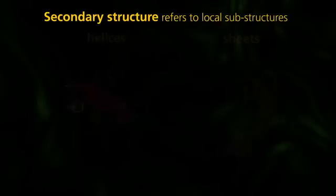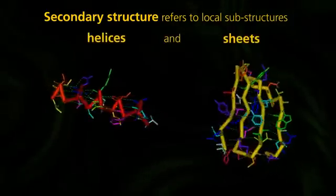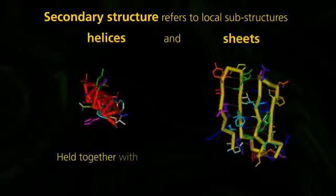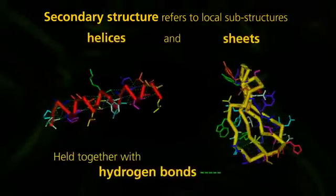Secondary structure refers to local substructures, such as helices and sheets, held together with hydrogen bonds.